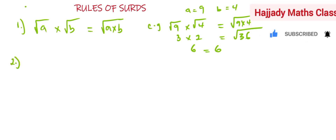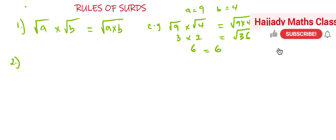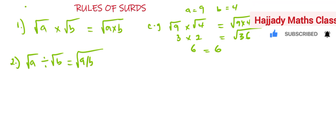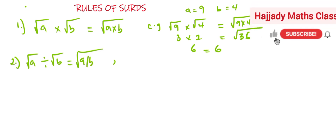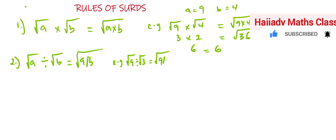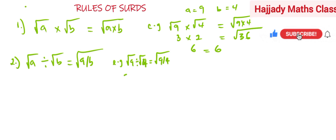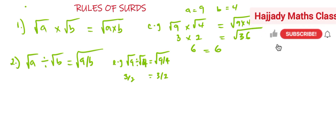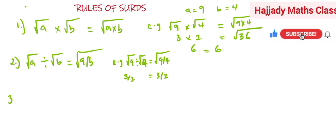Rule number two: when you have root A divided by root B, you can combine them as root(A/B). Let's confirm using the same values: root 9 divided by root 4 — is it the same as root(9/4)? Root 9 is 3, root 4 is 2, so 3 divided by 2 = 1.5. And root(9/4) = root(9)/root(4) = 3/2 = 1.5. Rule number two works.